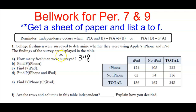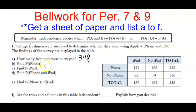College freshmen were surveyed to determine whether they were using Apple's iPhone and iPad, with findings displayed in a table. First, how many freshmen were surveyed? You can find that right in the bottom corner: 38. Then find the probability of using an iPhone — take the iPhone total and calculate the probability that somebody used an iPhone if surveyed at random. Same thing with iPad.